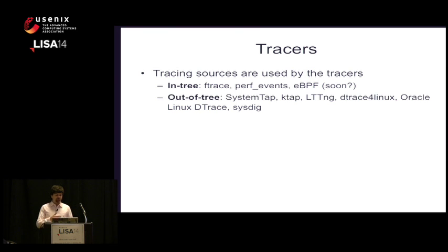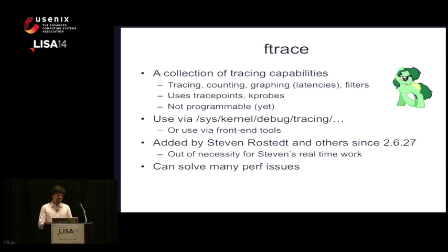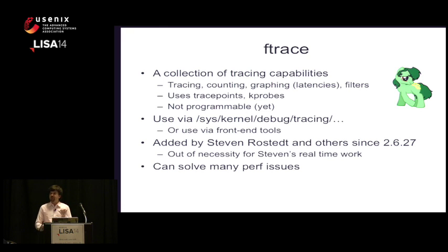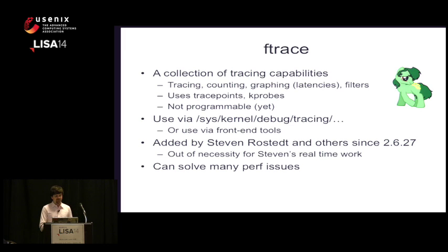There are tracers built on top of the instrumentation. In-tree we have ftrace and perf events, and eBPF is coming soon. Out of tree we have many others. ftrace — it even has a pony mascot now since DTrace has one — is a collection of tracing capabilities: tracing, counting, graphing, so you can do latency analysis. It's not programmable yet, so I can't do very custom in-kernel programs like with DTrace. You use it out of /sys or a front-end tool. It was added by Steven Rostedt, who works on the real-time kernel and has built ftrace feature by feature as he debugged live problems.